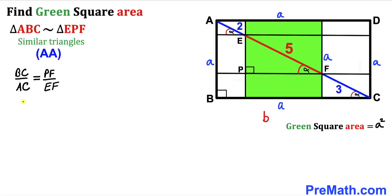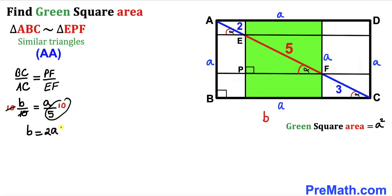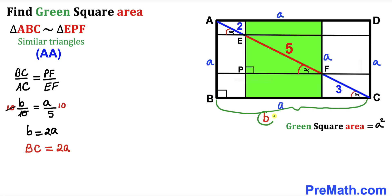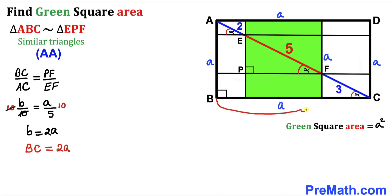We end up with b/10 = a/5. Multiplying both sides by 10 to isolate b, the 10s cancel and we get b = 2a. So the BC length equals 2a.